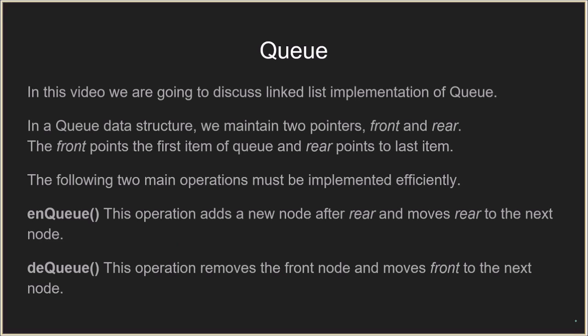In a queue we maintain two pointers: the first one is the front and the other one is the rear. Front basically points to the first item of the queue and rear points to the last item of the queue.